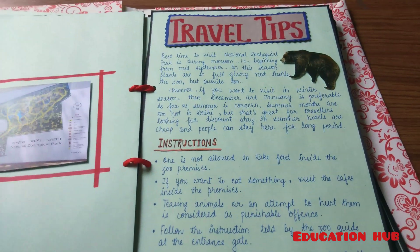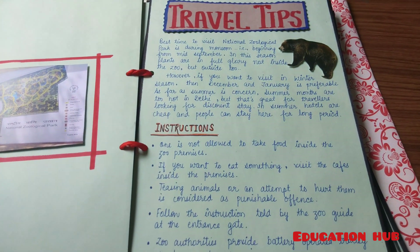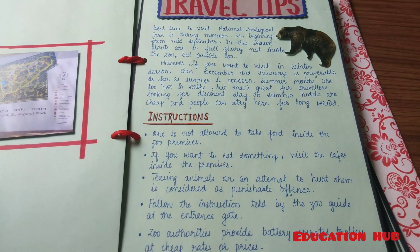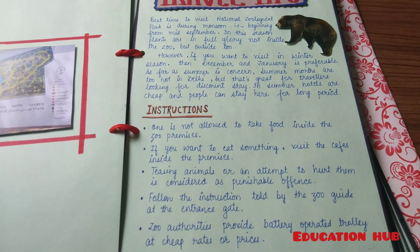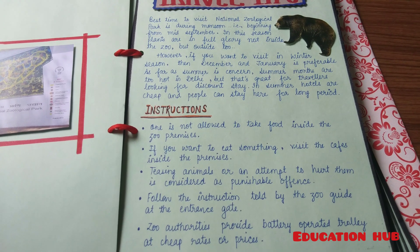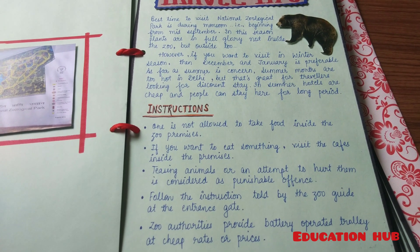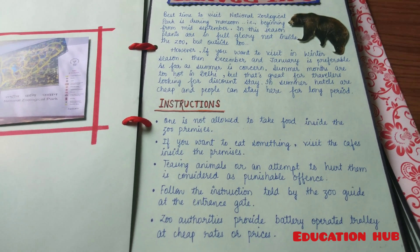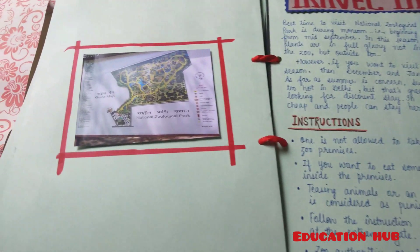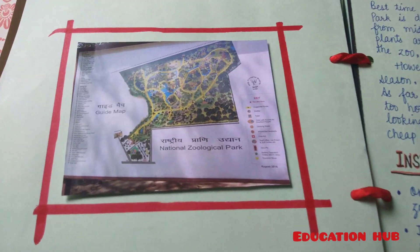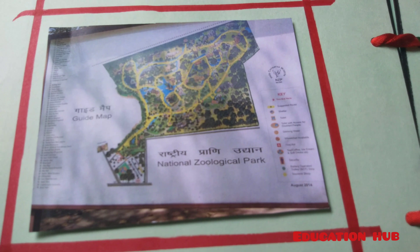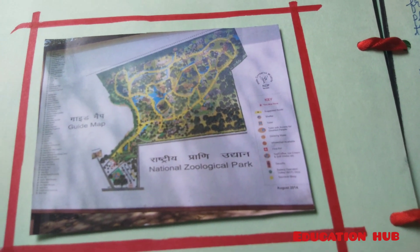Here are travel tips and instructions — food is not allowed inside the zoo premises, and so on. And here is the zoo map.